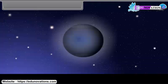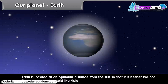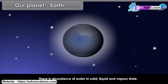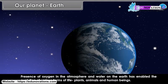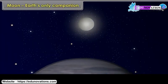Earth is located at an optimum distance from the Sun, so that it is neither too hot like Mercury nor too cold like Pluto. Extremes of temperature between day and night are reduced because of the presence of the atmosphere. There is abundance of water in solid, liquid and vapour state. The presence of oxygen in the atmosphere and water on the Earth has enabled the evolution of various forms of life — plants, animals and human beings. Owing to the abundance of water, the planet appears blue from space, and hence Earth got the name Blue Planet.